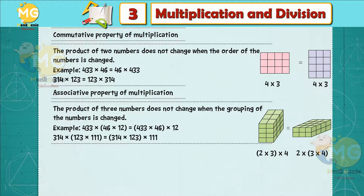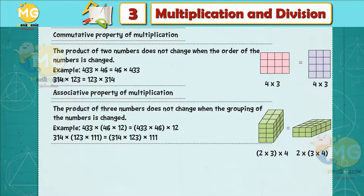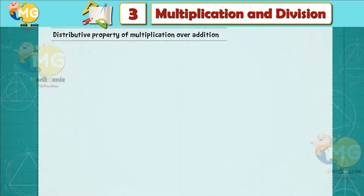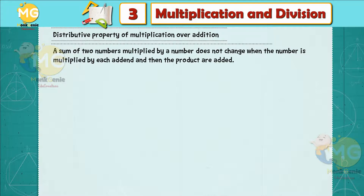Distributive property of multiplication over addition: a sum of two numbers multiplied by a number does not change when the number is multiplied separately by each addend and then the products are added. Example: 314 × 123 × 111 = 314 × 123 × 111.